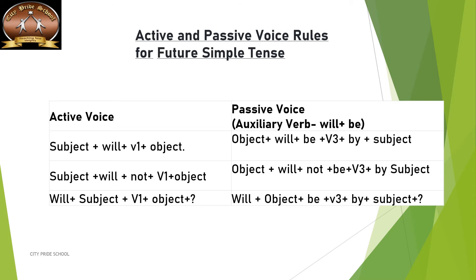The next rule for active to passive is in simple future. In simple future we always use 'will.' The structure of the sentence in active voice will be: subject plus 'will' plus V1 form of verb plus object. Whereas in passive voice: object plus 'will be' plus V3, followed by 'by' plus subject.